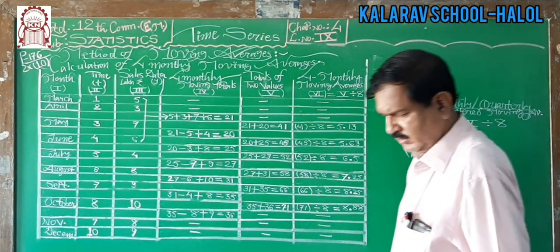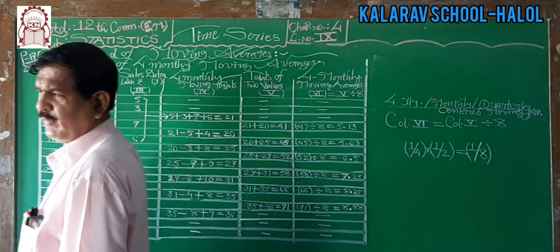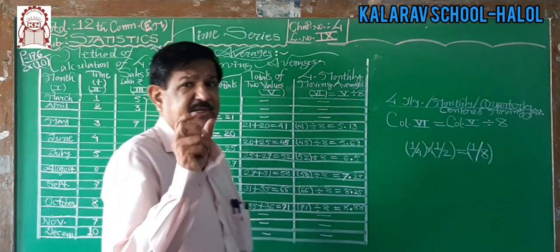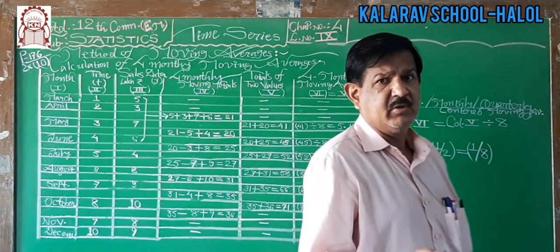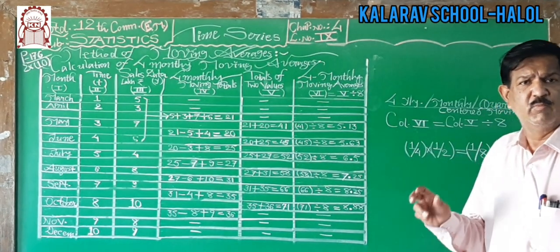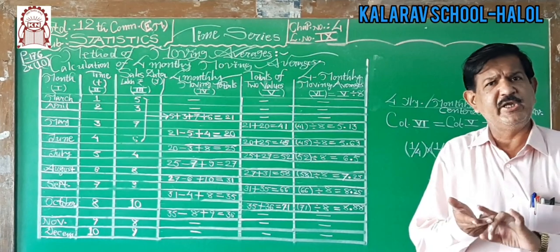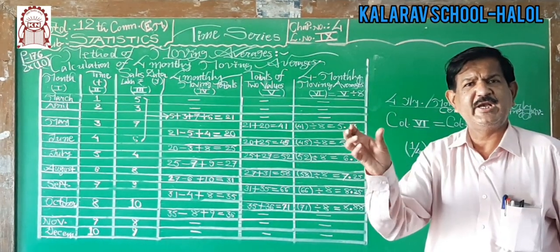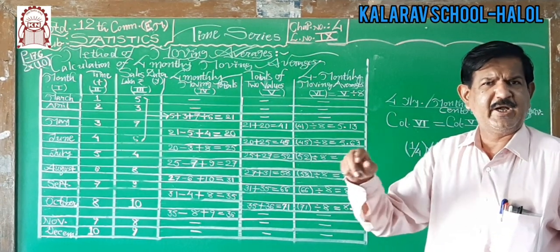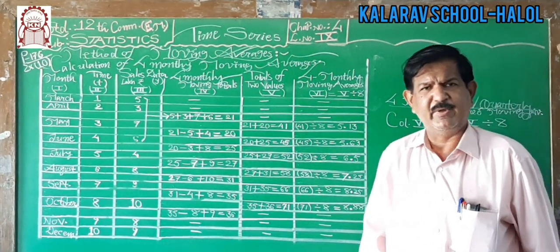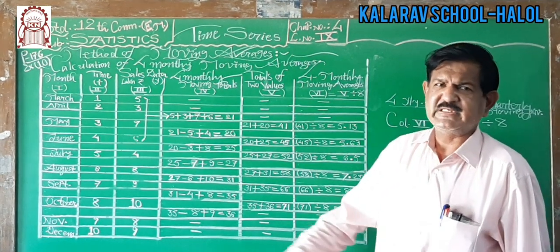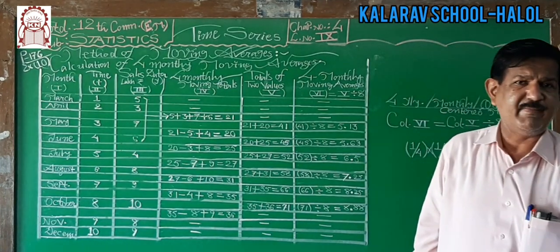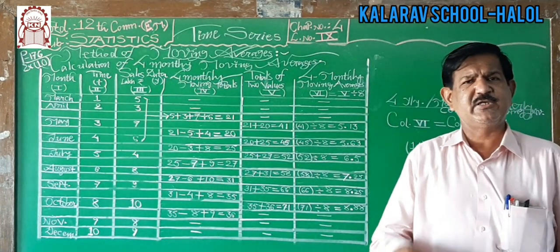Good morning everyone. Analysis of time series, chapter number 4, in which last time we discussed the method of moving average — 3-yearly, 5-yearly, and 7-yearly moving average. But today we take 4-yearly, or 4-monthly, or 4-quarterly centered moving average for a given example. In our textbook, paper number 176, example number 10 gives data of sales in rupees from March to December.